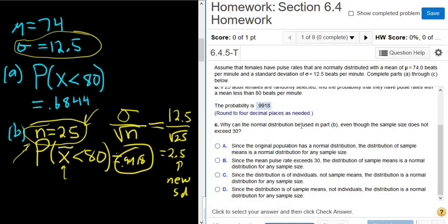Now there's a follow-up question. It says, why can the normal distribution be used in part B, even though the sample size does not exceed 30? Okay, before we read the choices, let me explain this. So n is 25. So if n is bigger than 30, then x-bar is approximately normal, so you can use the normal distribution, right?